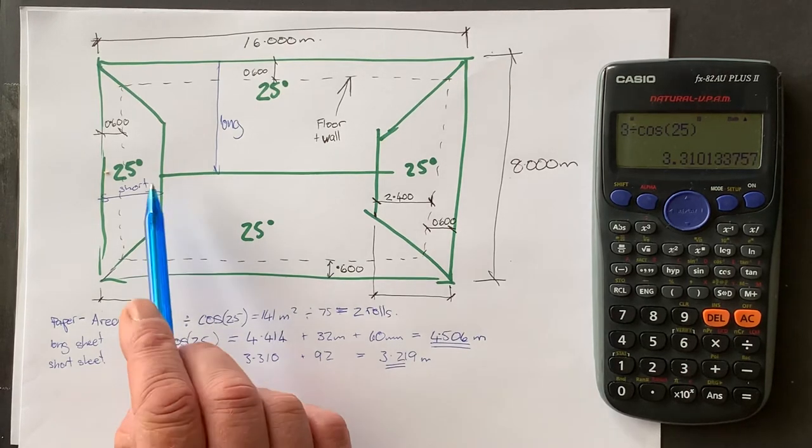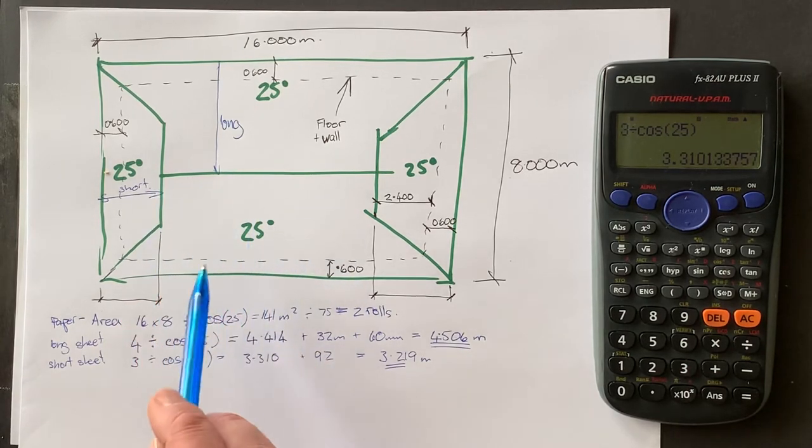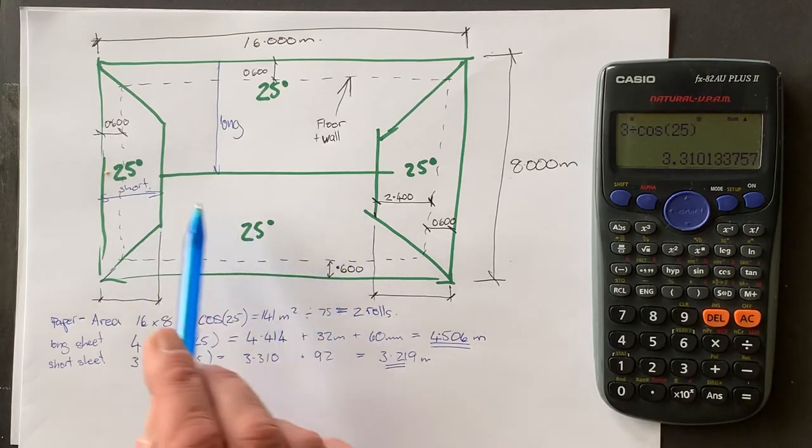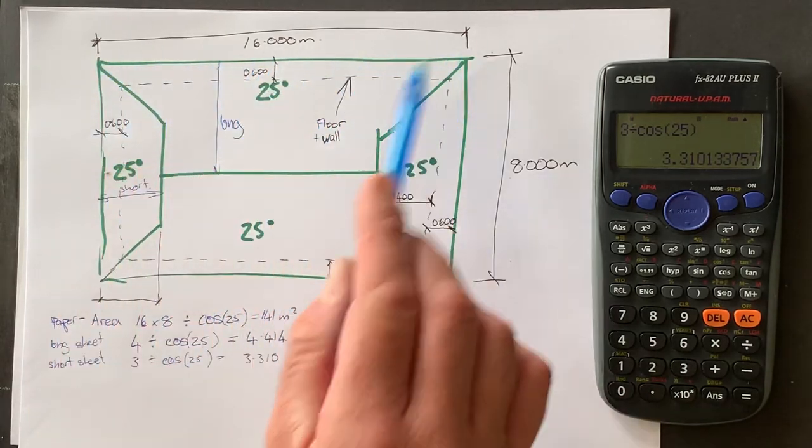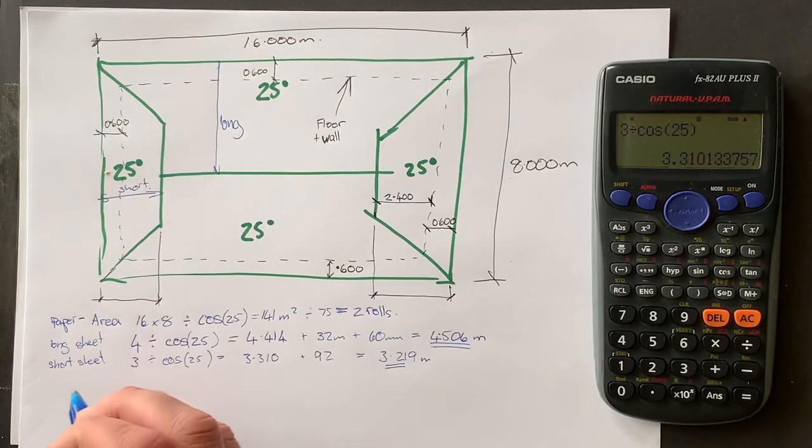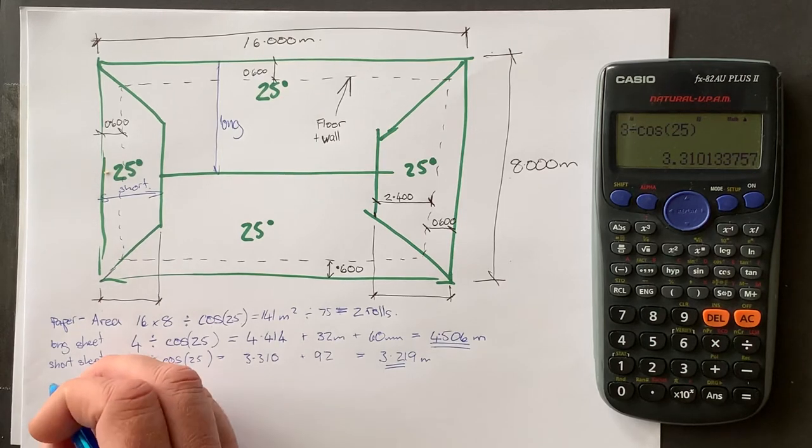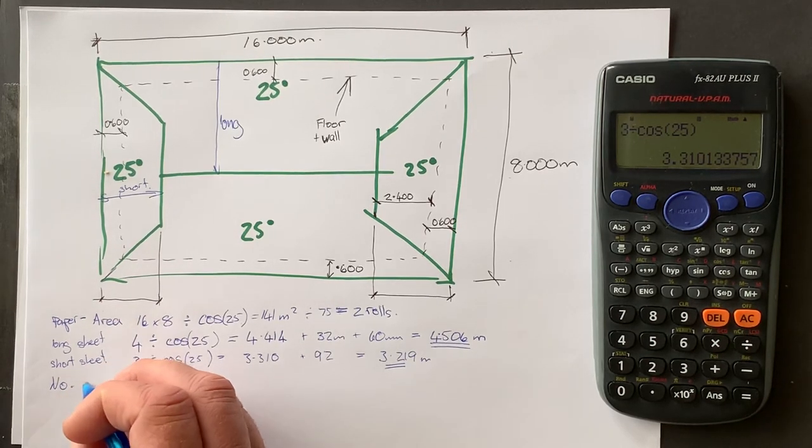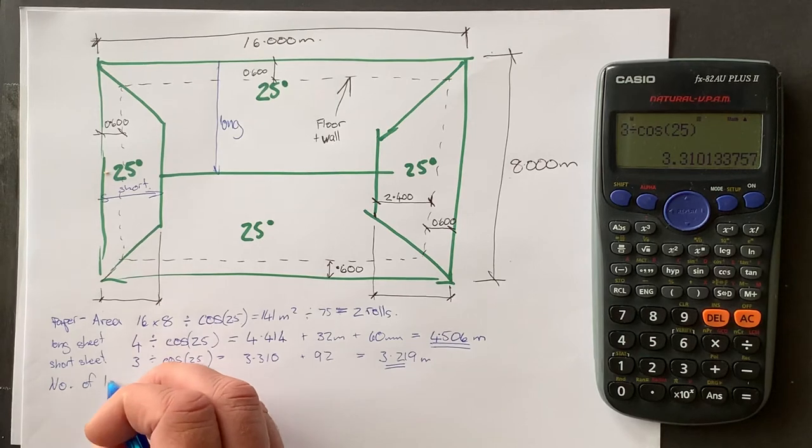Now, the other thing we want to do is work out how many sheets we need. So if we know that this total length here is 16 meters. So this is number of, we'll do the long sheets first.